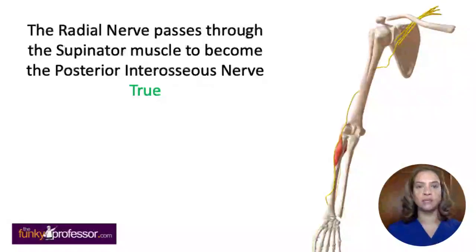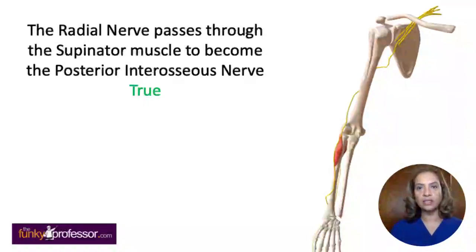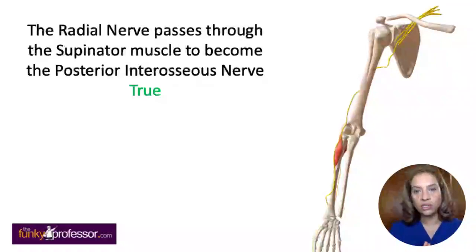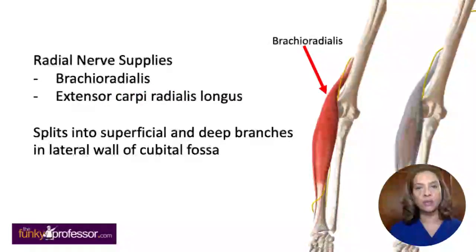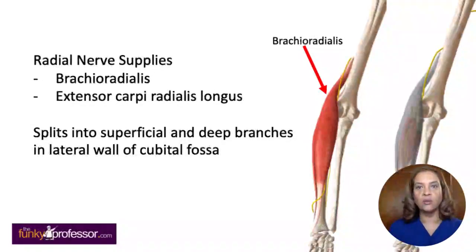The radial nerve is one of the terminal divisions of the posterior cord of the brachial plexus. You can see the radial nerve running down behind the humeral shaft, very close to the bone, emerging on the lateral aspect distally. The radial nerve supplies the mobile wad of three — the brachioradialis and the extensor carpi radialis longus — before splitting into superficial and deep branches in the lateral wall of the cubital fossa.